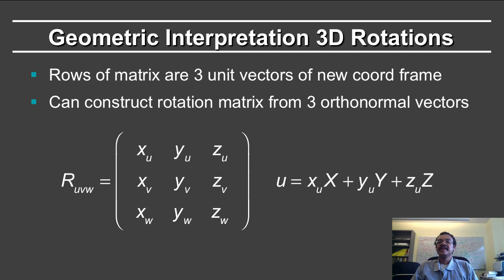This leads to the nice geometric interpretation of 3D rotations: the columns of the matrix are the 3 unit vectors of the new coordinate frame. One can construct a rotation matrix from any 3 orthonormal vectors. The u coordinates are simply xu, yu, zu; v coordinates similarly; and w coordinates likewise.